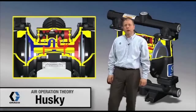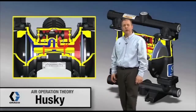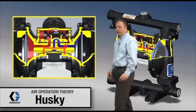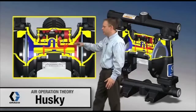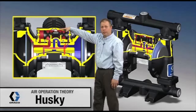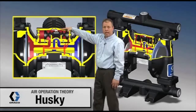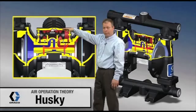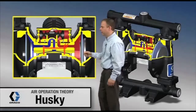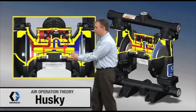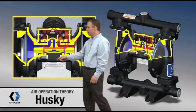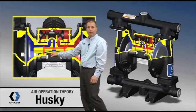We're going to talk about the air valve and air logic in the Husky 1050 pump. Component identification: the air valve is on top with four bolts — it's a modular design, so if you need to replace or repair it, four bolts and it pops right off. Behind the first diaphragm there's a poppet valve, and on the other side, another poppet valve.